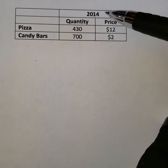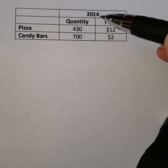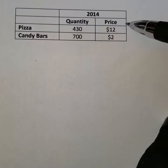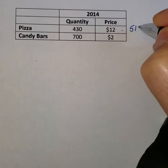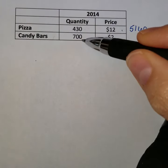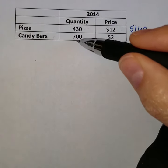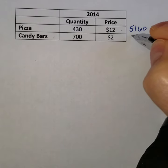In this example, if I ask you what is the cost of the CPI basket for 2014, you would multiply 430 times 12, which gives you 5,160, and then multiply the number of candy bars, 700, times the price, which is $2, giving us 1,400.